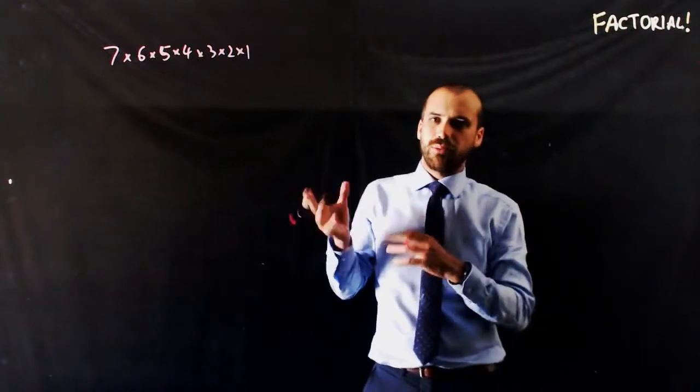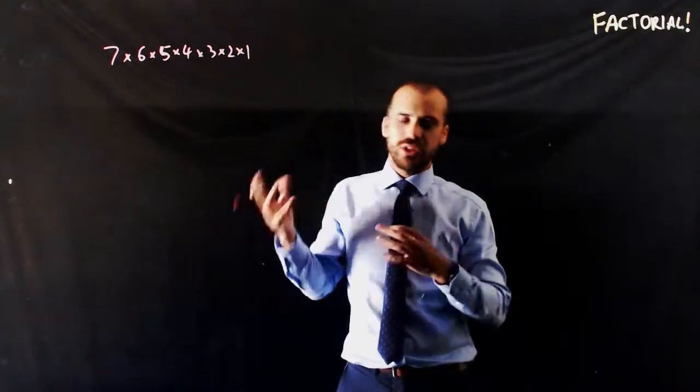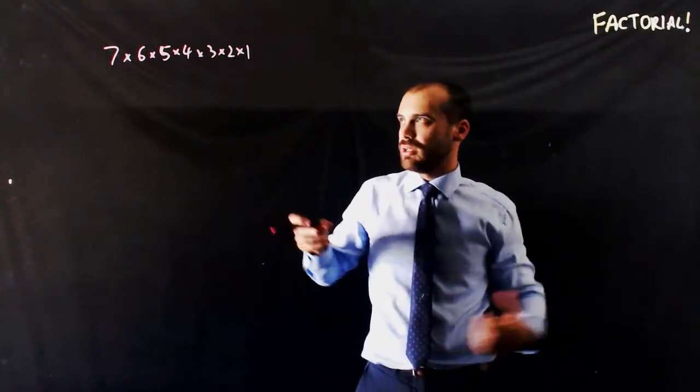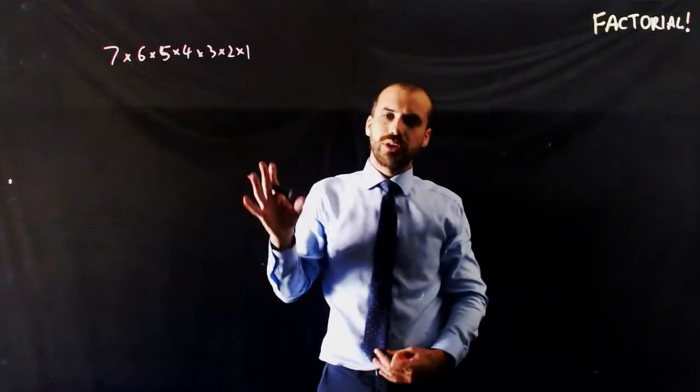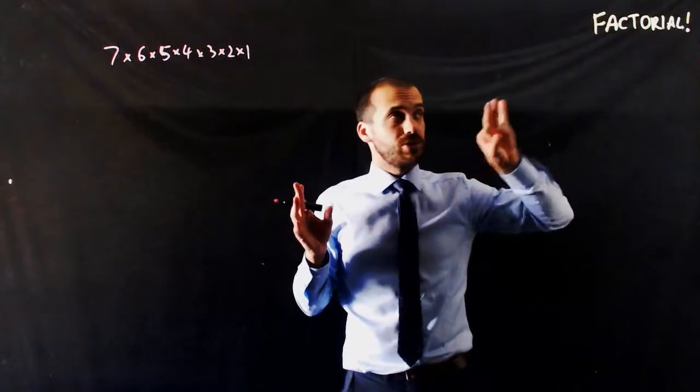This happens a lot when you're trying to come up with arrangements. How many different ways can I arrange these seven-digit numbers or these seven letters or these seven people in a line? This happens so frequently in mathematics that we actually have an operation to deal with it. It's called factorial.